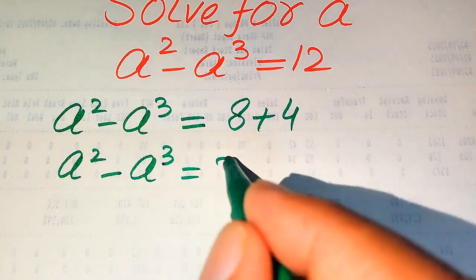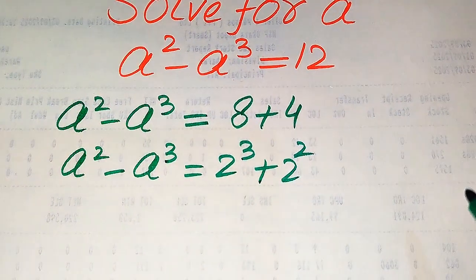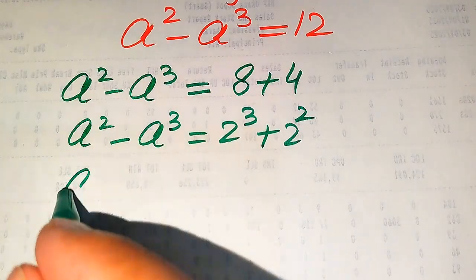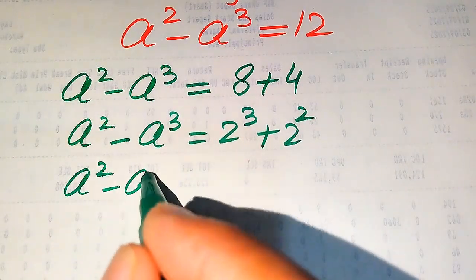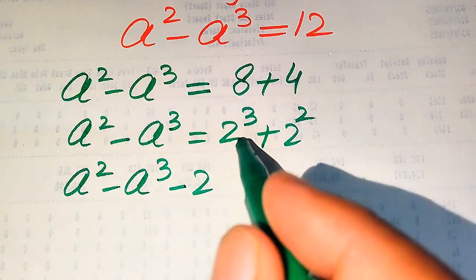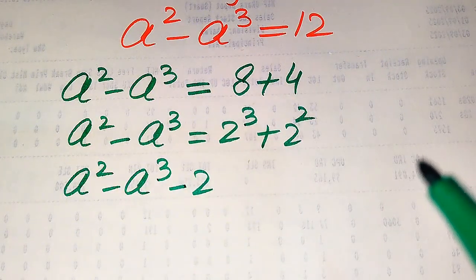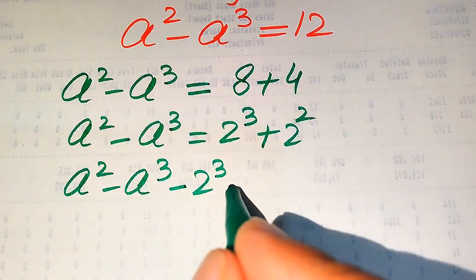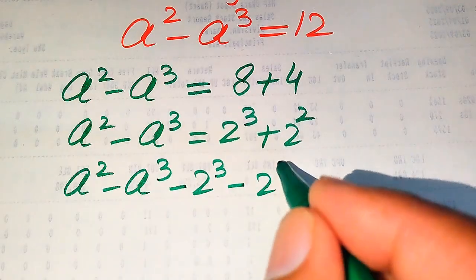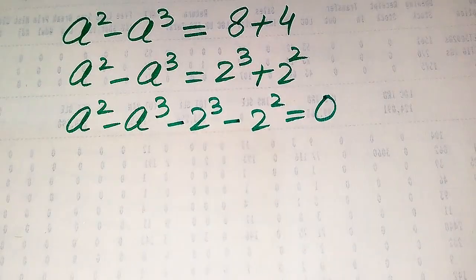We write 8 as 2 cubed and 4 as 2 squared. Now we move these two values to the left-hand side: a squared minus a cubed plus 2 cubed minus 2 squared equals zero.